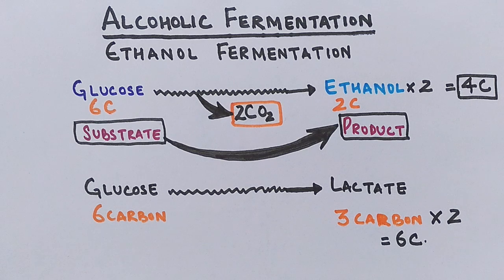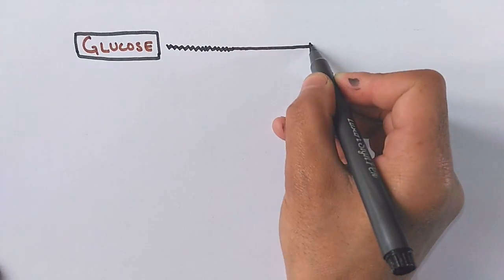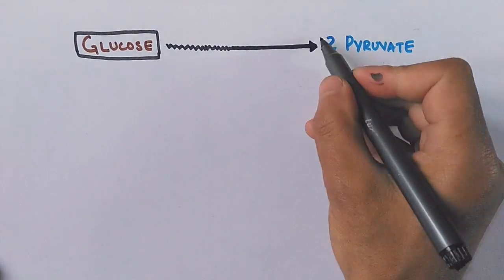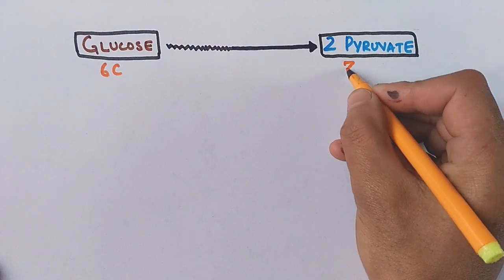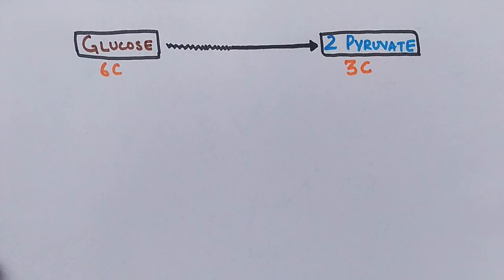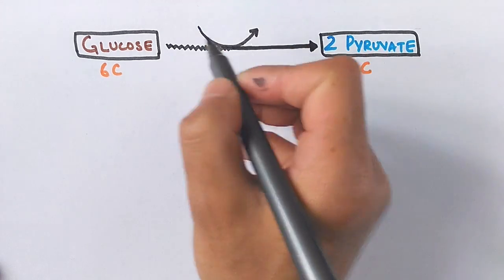Let's now see in detail how alcoholic fermentation occurs. First, the glucose molecule — the sugar molecule — is converted into pyruvate through glycolysis, as we have already seen in lactic acid fermentation. Glucose has six carbons, and each pyruvate has three carbons; two pyruvate molecules are formed, giving six carbons total. This whole process from glucose to pyruvate is glycolysis, and it also drives the formation of ATP.